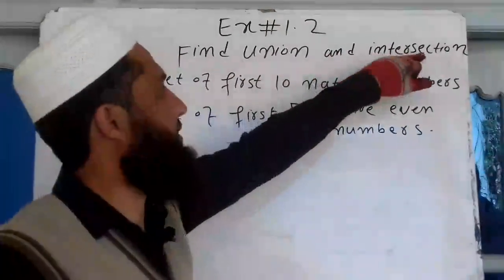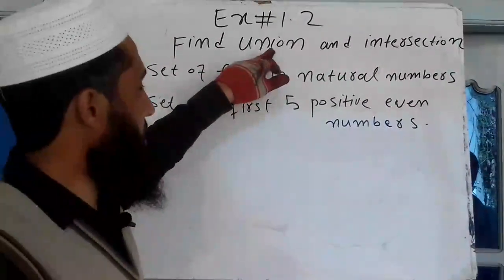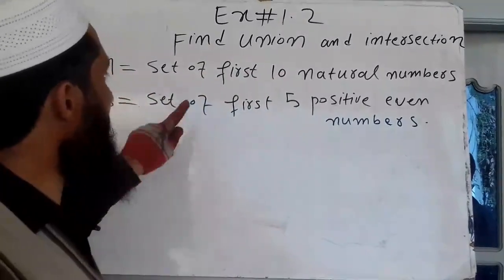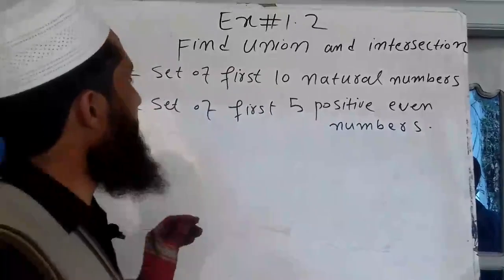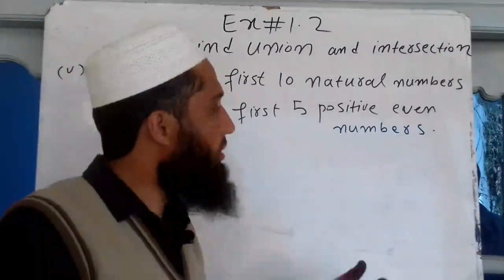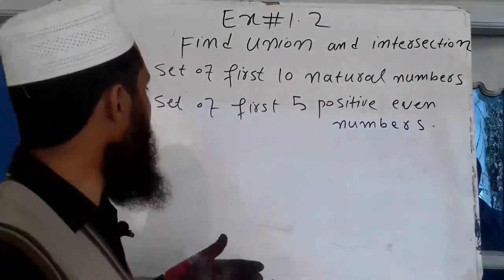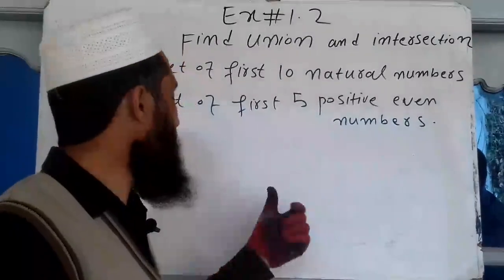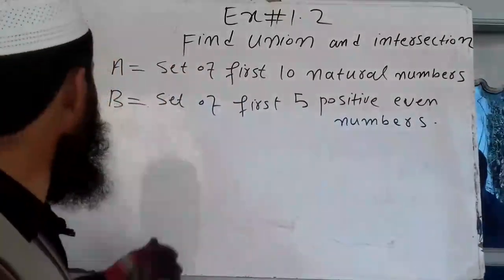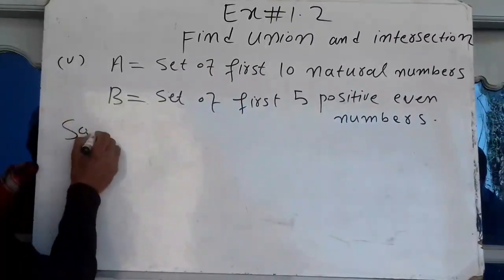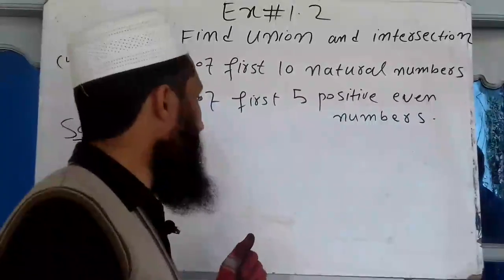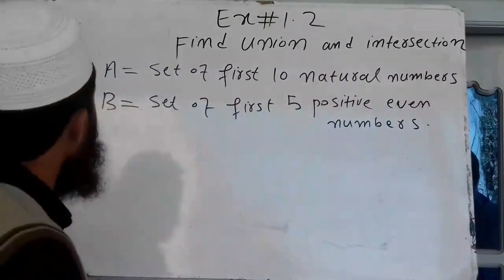Is it a union or an intersection? So this is a table or roster form. What we're going to do is start with the table or roster form, also called listing form. Now we have to use the Roster method, Tabular method, or Listing method.